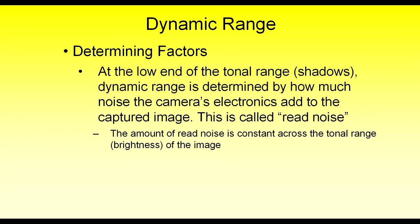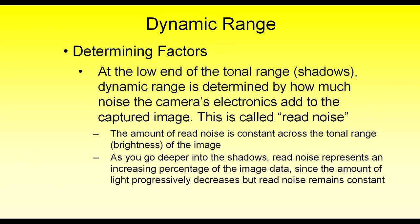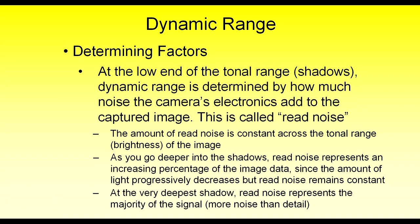Read noise is noise induced by the camera, and it happens to be constant across the entire tonal range of the image. So there's the same amount of noise introduced within the deep shadows as there is being introduced into the highlights. Even though that noise exists in both shadows and midtones and highlights, the noise only starts becoming perceptible as you go further into the shadows because the amount of light in the shadows is going down but the read noise is constant — it represents an increasing percentage of the image data. At the very extreme of the deepest shadow, you get to the point where the read noise completely overwhelms the signal, and it's at that point that establishes the bottom range of the dynamic range that camera is capable of.